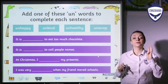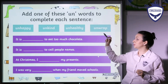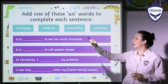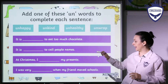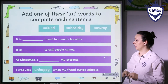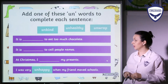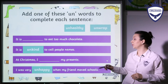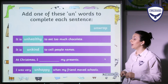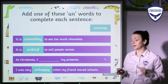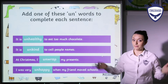We have here four sentences with missing words that we are going to put in the correct place — all of these missing words have the prefix un. Unhappy: I was very unhappy when my friend moved schools. Unkind: It is unkind to call people names. It is unhealthy to eat too much chocolate — have this in mind all the time. At Christmas I unwrap my presents.